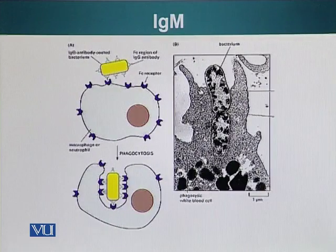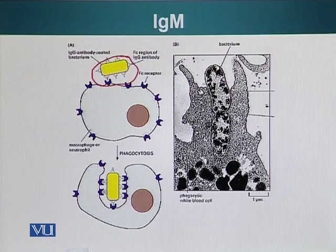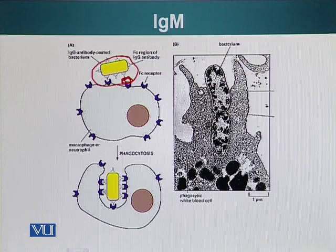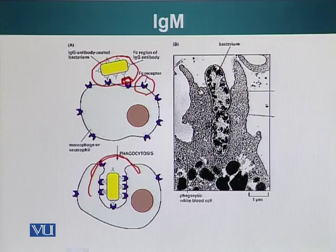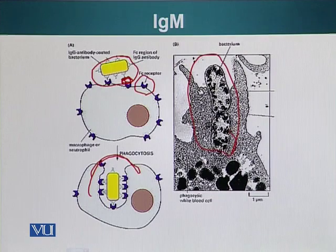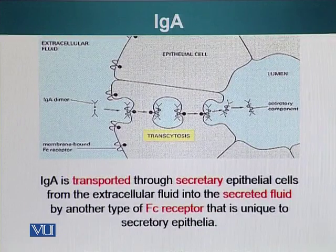Let's look at a photograph of a phagocytic cell endocytosing a pathogen. Here we have a pathogen that has been decorated by IgG antibodies, and the very tip of these antibodies is the FC region. This tip of the antibody can bind special receptors on phagocytic cells called FC receptors. When they bind the FC receptors, it activates these cells and causes receptor-mediated endocytosis — the membrane engulfs the pathogen and encloses it in a vesicle. This vesicle then fuses with a lysosome and causes destruction of the pathogen. You can also see an electron micrograph of a phagocytic cell engulfing a bacterium.